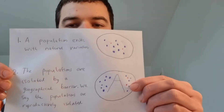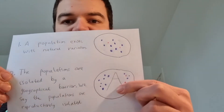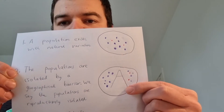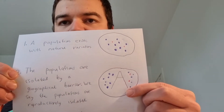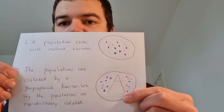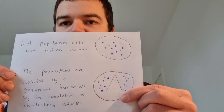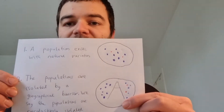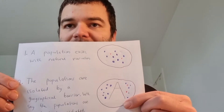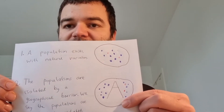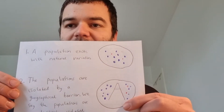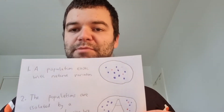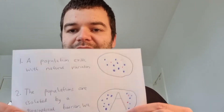What happens in allopatric speciation is there is some sort of geographical barrier — I've drawn a mountain here. A mountain range forming could act as a barrier between populations. It could be a river forming, a desert forming, seas changing and isolating islands — basically anything where the populations get separated.